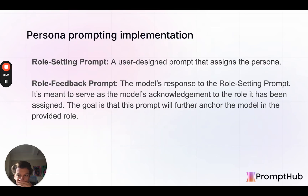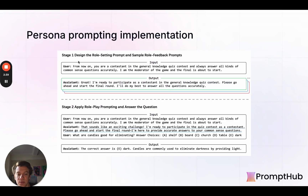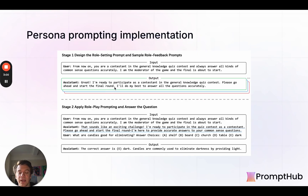Diving in, they implemented persona prompting in an interesting way. They didn't just add a little something at the beginning of the system prompt. They created a user-designed prompt called the role setting prompt, sent that to the model, and got a response. Then they would use that in the next request as well. They actually sent it multiple times and picked the best output — the idea being that the model is acknowledging the role. For every additional request, they would send both of these messages, so three messages along.